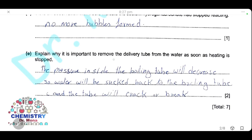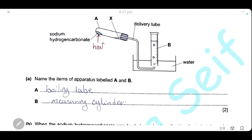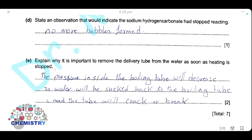Explain why it is important to remove the delivery tube from the water as soon as heating is stopped. The delivery tube must be removed because by stopping heating, the pressure inside the boiling tube will decrease, and water will be sucked back from the water trough into the boiling tube, causing the tube to crack or break.